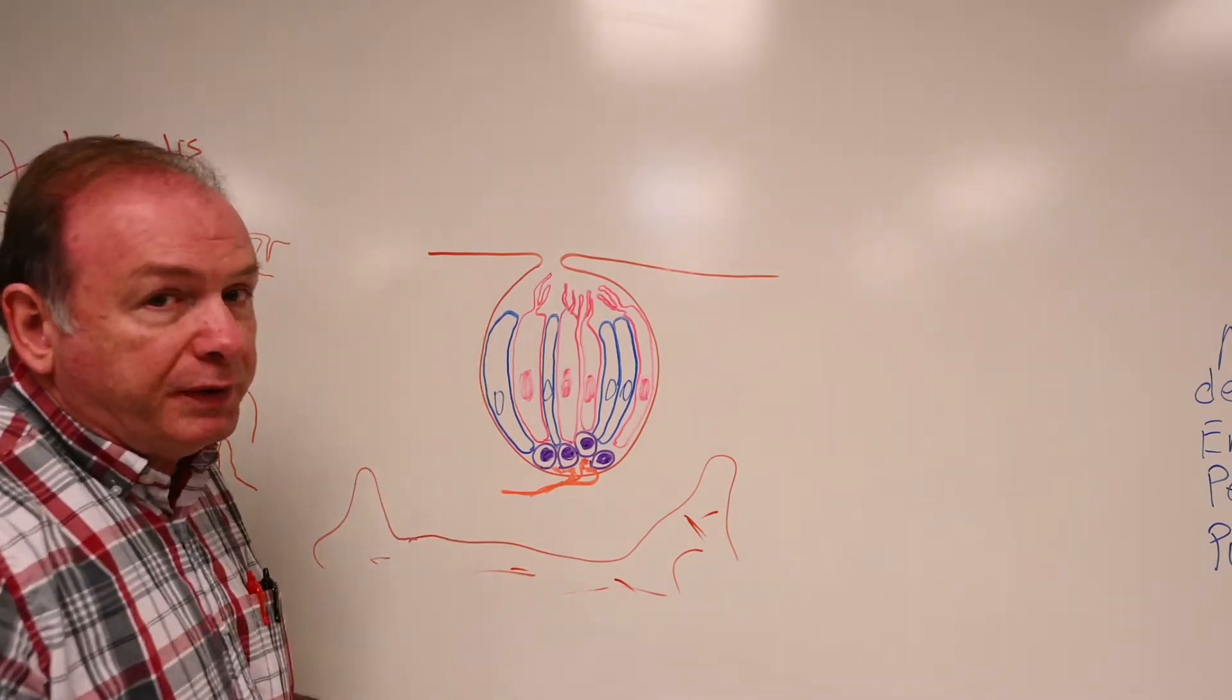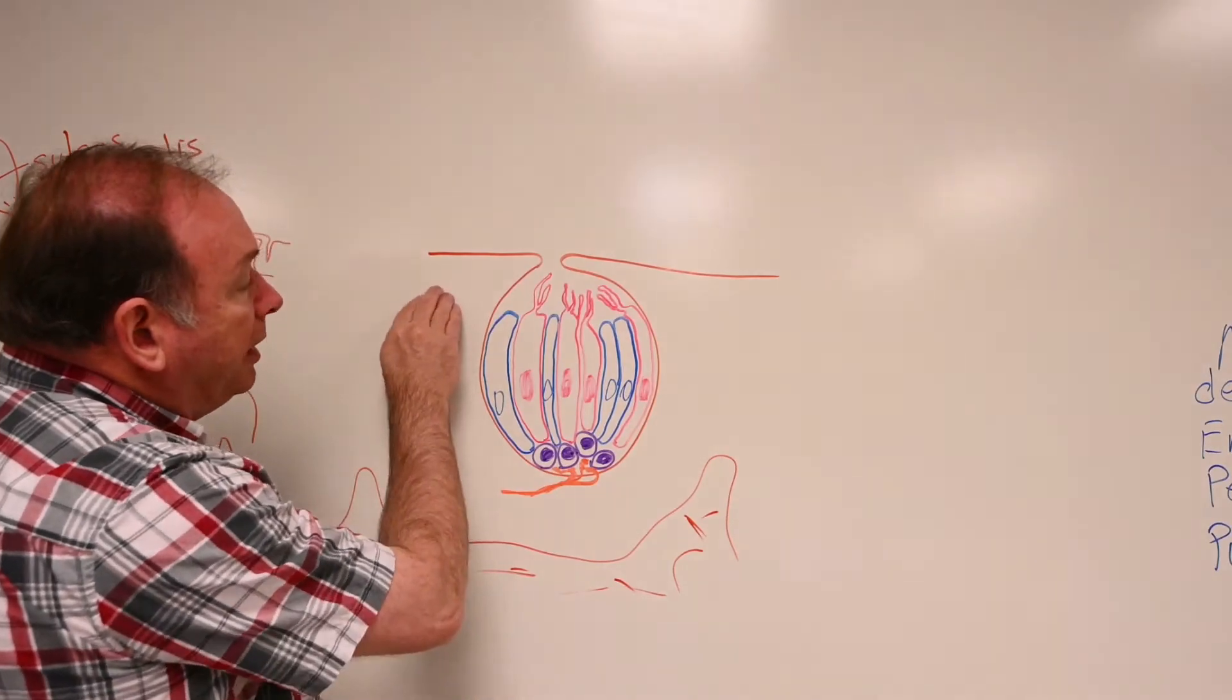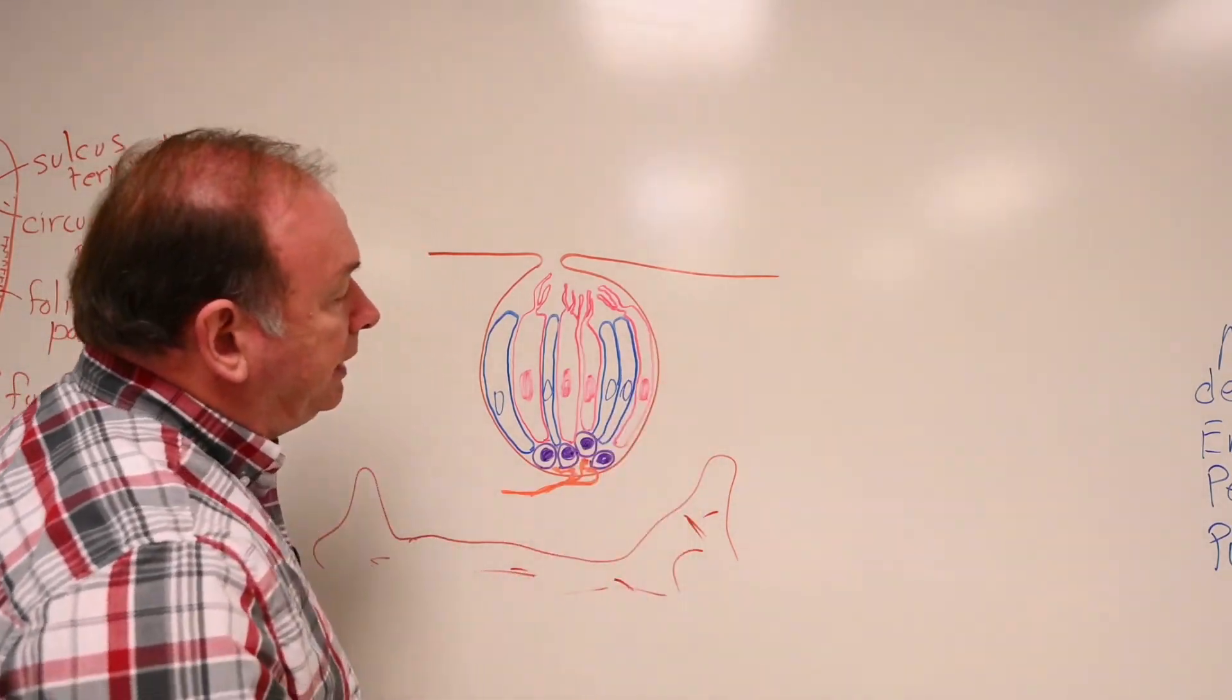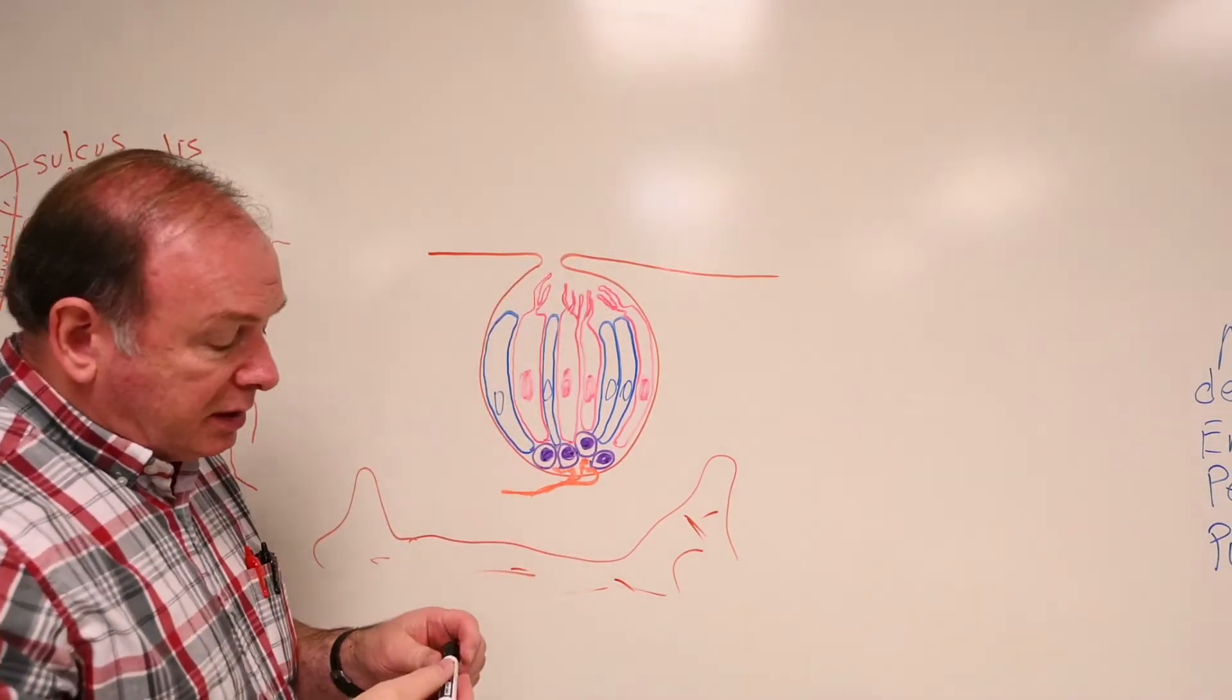So this is in the epithelial layer, stratified squamous epithelium, non-keratinized, mostly epithelium, on the surface of the papillae, extending out here.